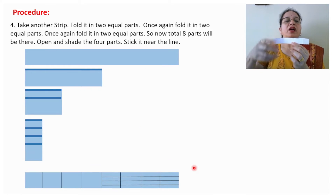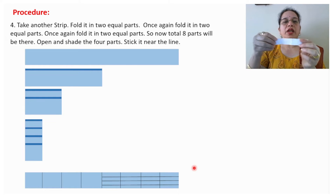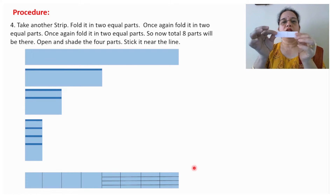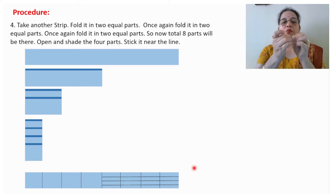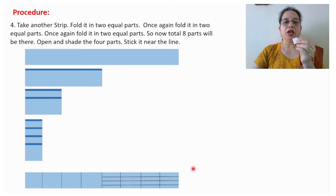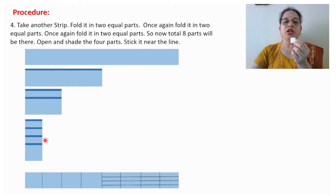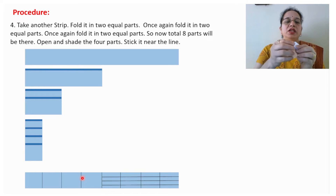Now take another strip. Fold it in two parts, make the crease properly. Then fold it in two parts once again, and once again fold it in two parts. When you open this, you can see here a total of eight parts — you can see the creases.